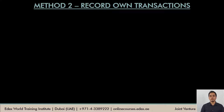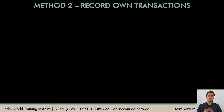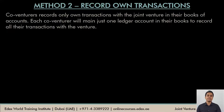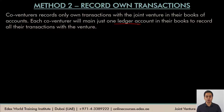What's the primary difference between the two methods? In the first method, a separate set of books were maintained for the joint venture business. But in the second method, that is not followed. The co-venturers will just record their own transactions in their existing business books. Whatever transactions a co-venturer enters with the joint venture business, that would be recorded by him in his own business books. Each co-venturer will just maintain one single ledger account to record all the transactions that he incurs for the joint venture business.